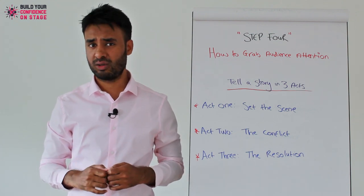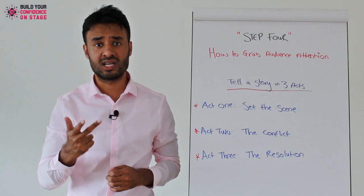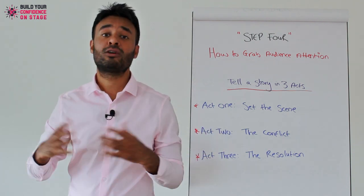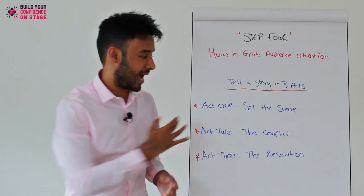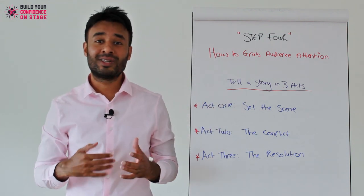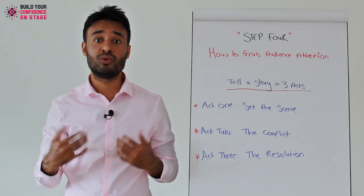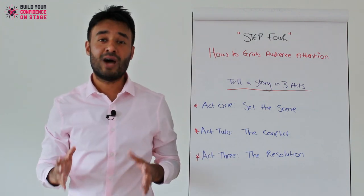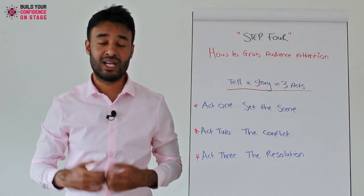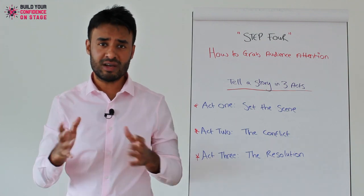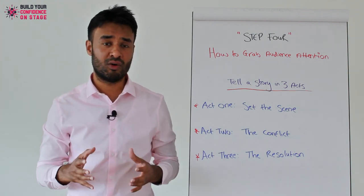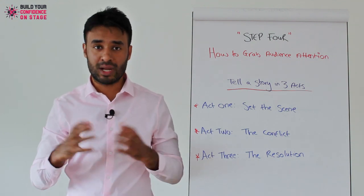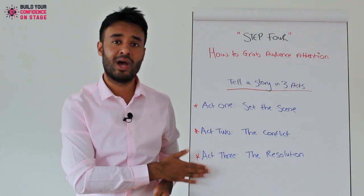When you set the scene, this could include a few things. For example, people, place, things or time. With regards to Act 2, that is the conflict — where did something go wrong in Act 1, so that you're able to connect the dots and connect the story, so people are then tuned in because they're able to relate with it. And in Act 3 is the resolution — how did you solve that conflict and what were the lessons that you learned along the way? I've created a fictional story as part of this telling a story in three acts mold so that you're able to understand exactly what I'm talking about.